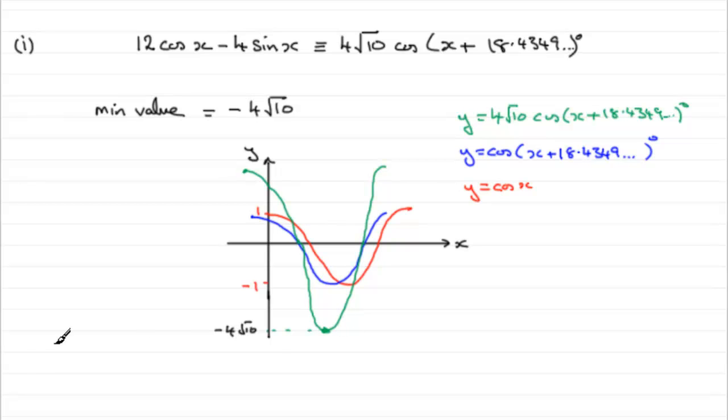And in the second part, it asks us to find out what's the first positive value that this minimum value occurs at. Well...